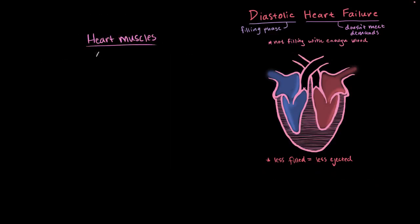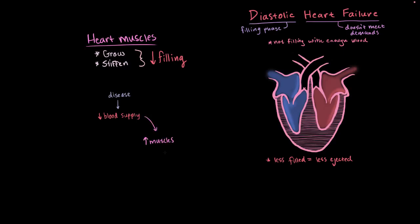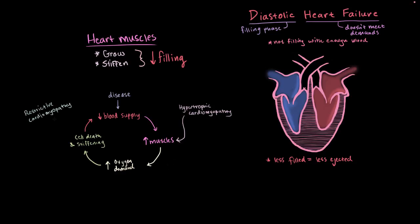With diastolic heart failure, the heart muscles either get bigger, get stiffened, or both. When this happens, less blood fills into the ventricles and the heart can't passively expand as much, so it can't relax completely. You end up with a cycle leading to worsening heart failure: an underlying disease like hypertension or stenosis makes it harder to pump blood, so the heart muscles increase in size. But bigger muscles do more work and need more oxygen. With heart failure, you can't supply more oxygen, leading to cell death, which causes fibrosis and stiffening — feeding back into a lower blood supply and making it even harder to pump. Diseases like hypertrophic cardiomyopathy or restrictive cardiomyopathy can directly affect muscle size or stiffening, and this cycle progresses, making heart failure worse.